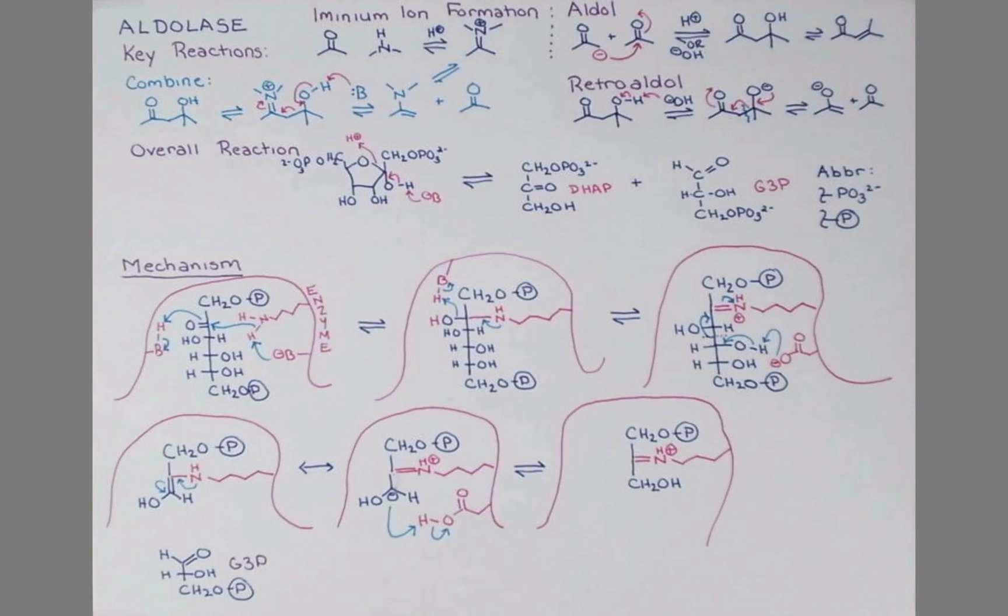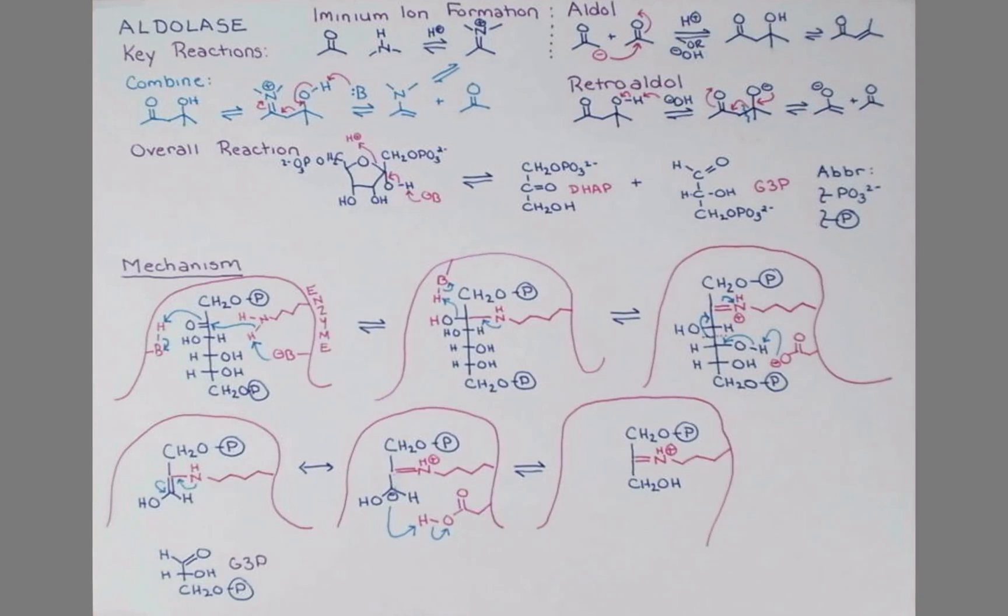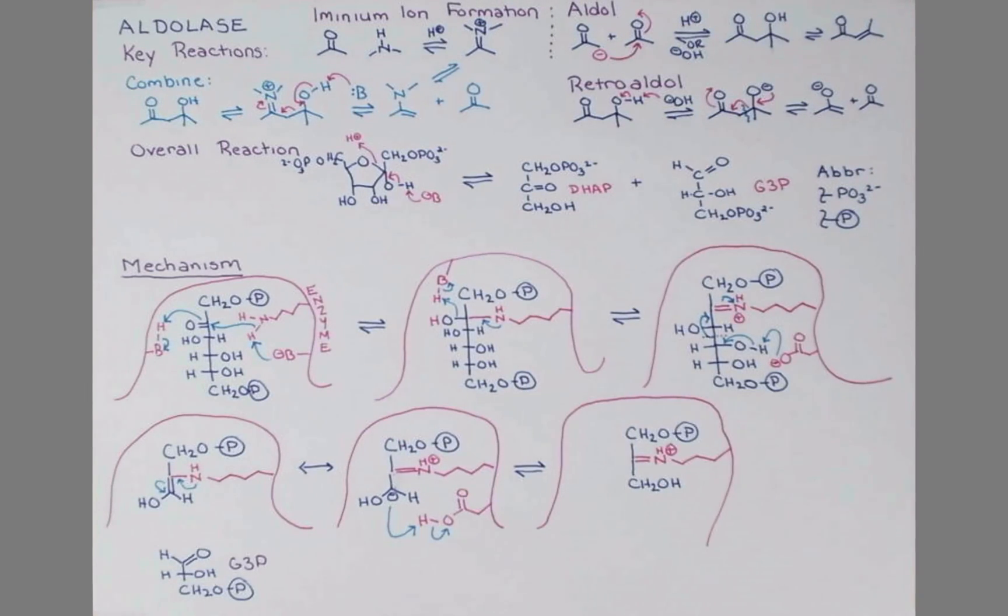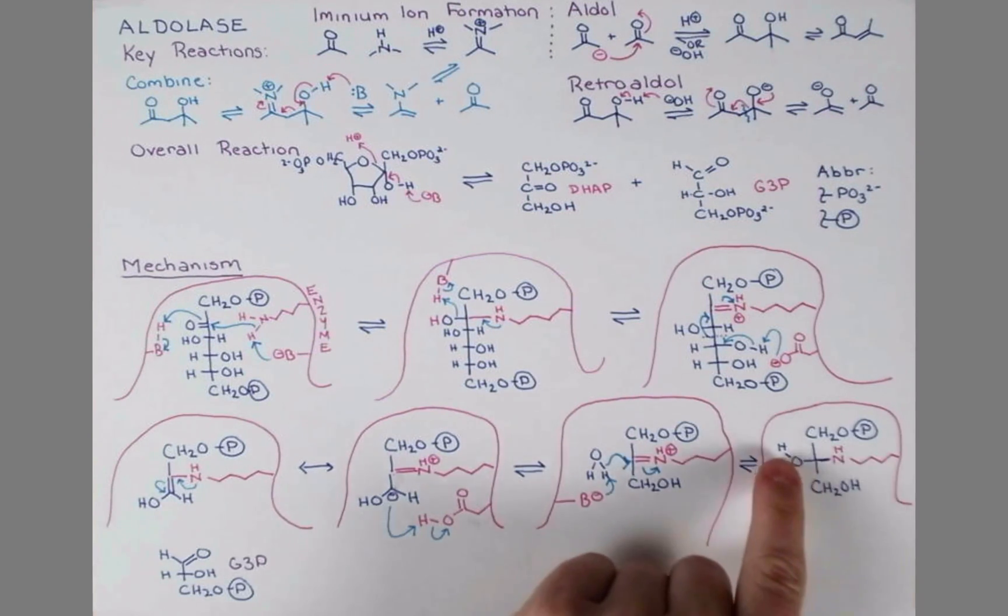And that's how we're going to form DHAP. To begin that process, we now need to add in a molecule of water. Here's our water, and I've added in a generic basic amino acid residue that can accept a proton here, so that these electrons can form a bond.